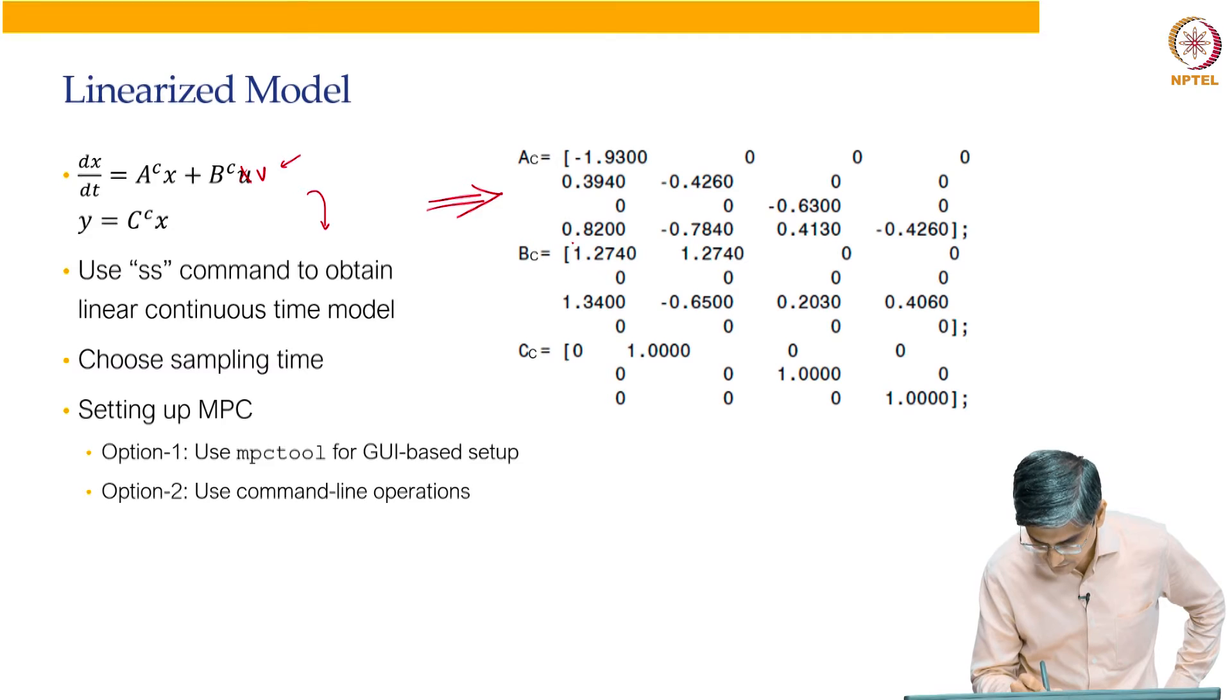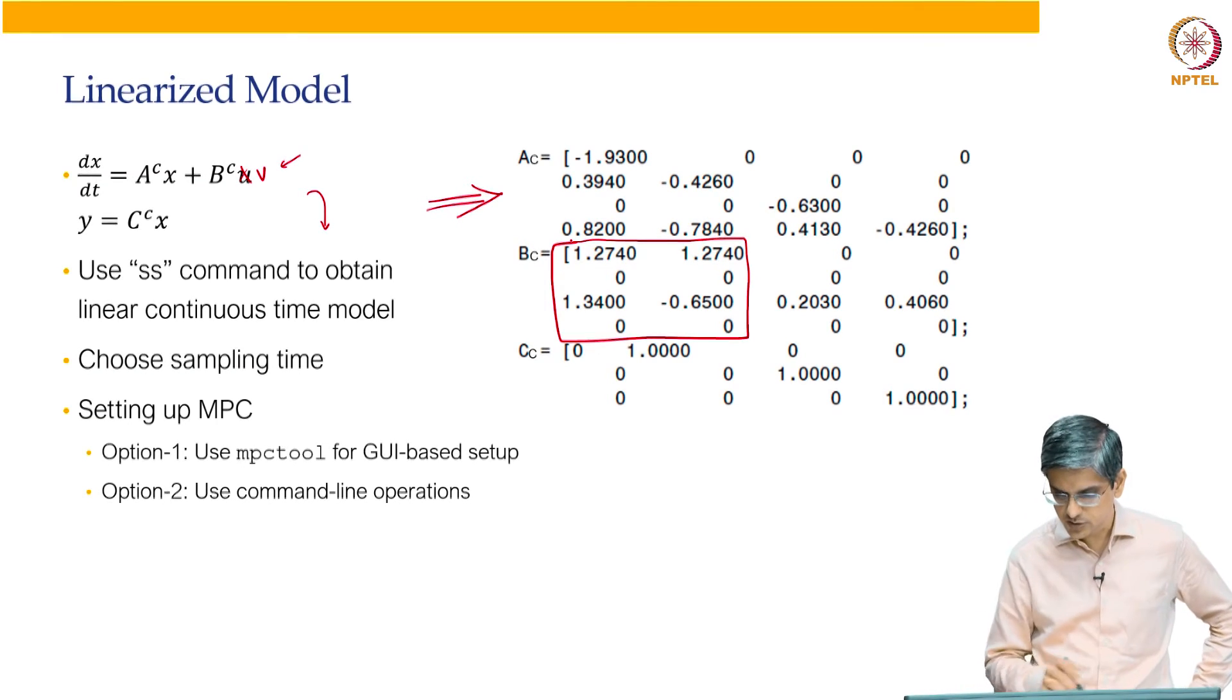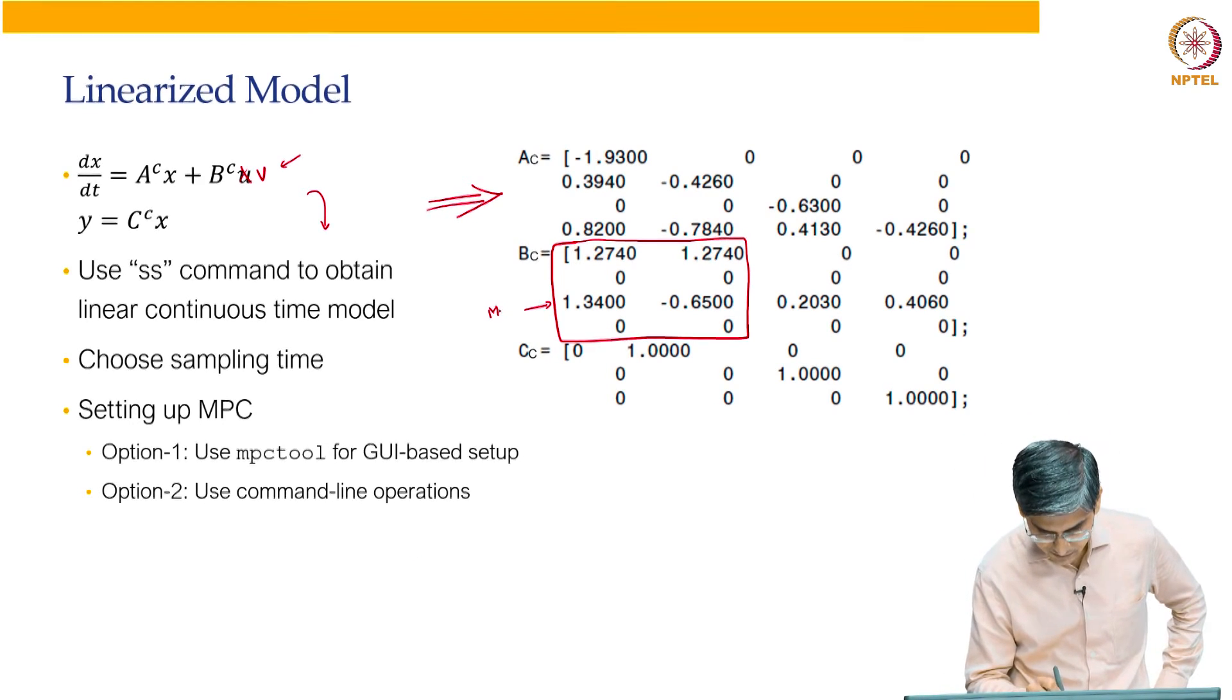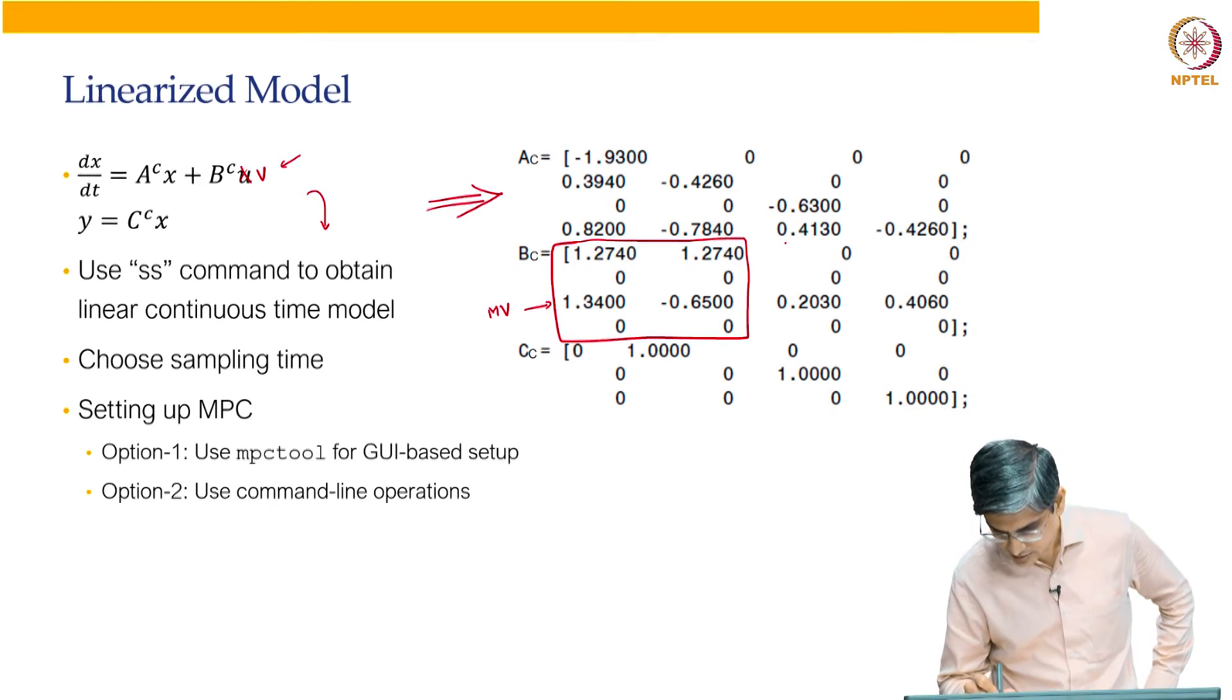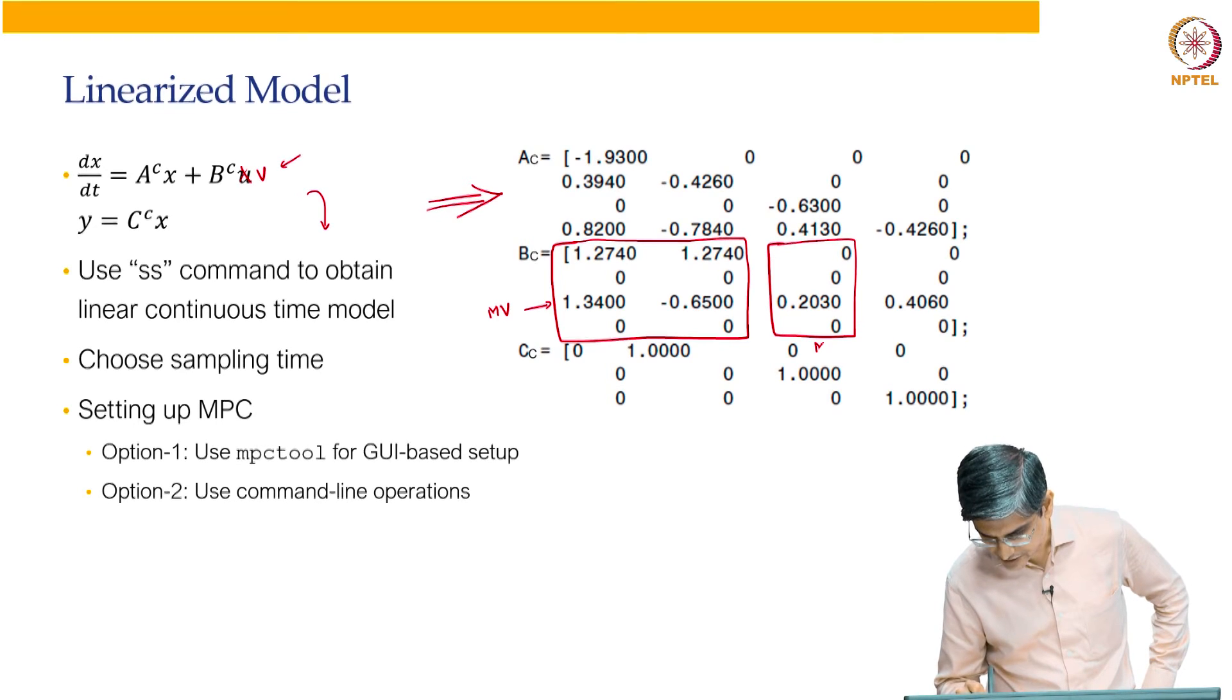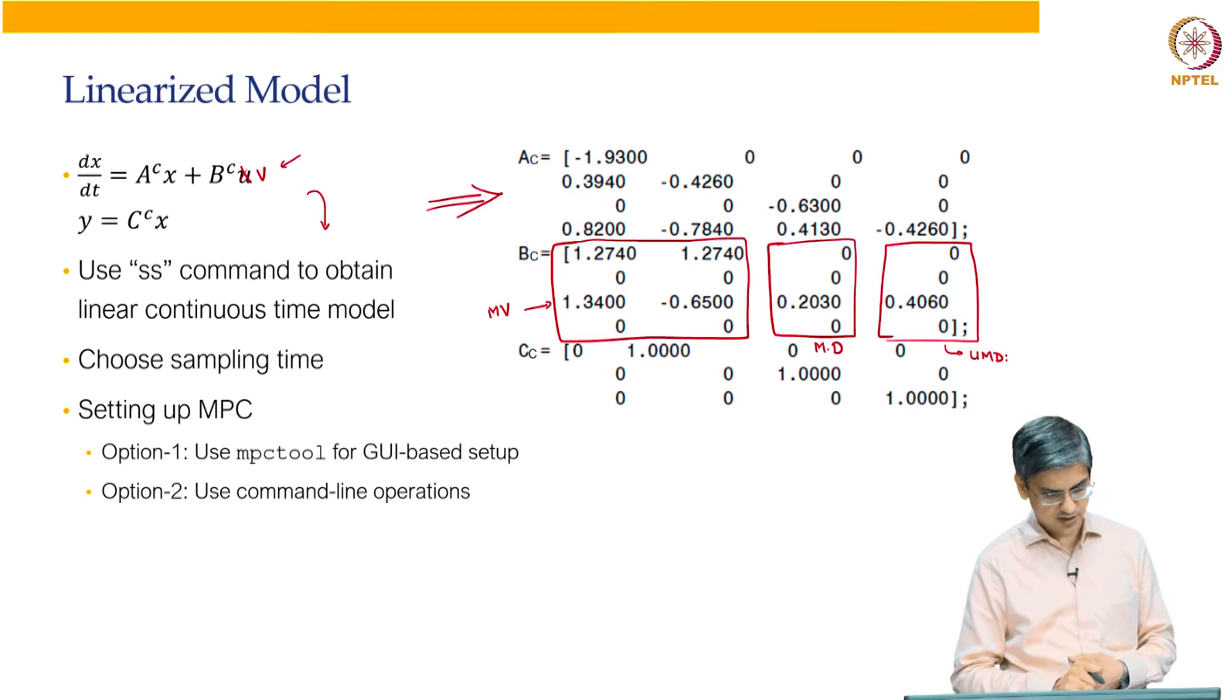Now, BC, if you look at this, basically these two correspond to the manipulated variable. U1 and U2 are the manipulated variables. This one corresponds to measured disturbance. This guy corresponds to unmeasured disturbance. So that is how you have your overall matrices that are set up.